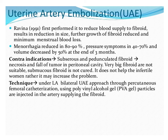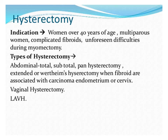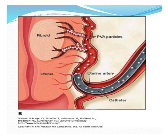Under local anesthesia, the bilateral uterine arteries are approached through percutaneous femoral catheterization using polyvinyl alcohol gel particles injected into the artery supplying the fibroid. A picture of uterine artery embolization shows the catheter passed into the uterine artery and polyvinyl particles blocking the blood supply of the fibroid, after which it will regress.